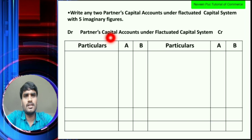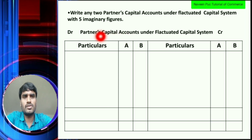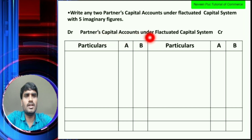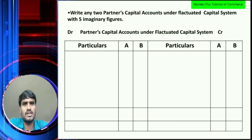When you start to prepare the accounts, the heading is: Partners' Capital Account under Fluctuating Capital System. So let's open the account and prepare the partners' capital account.